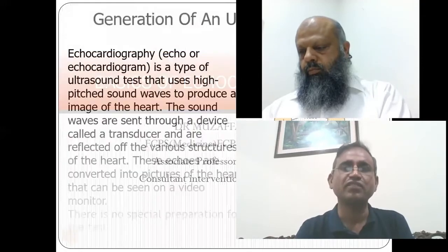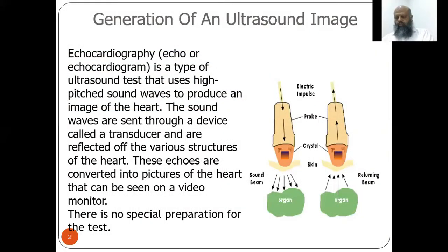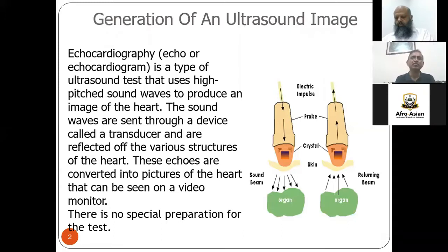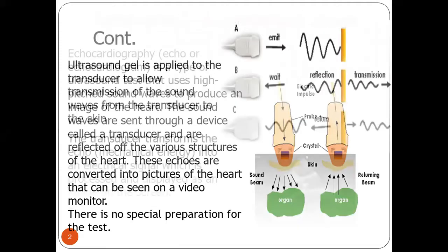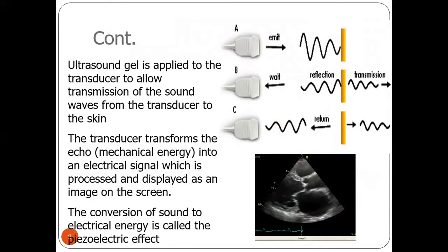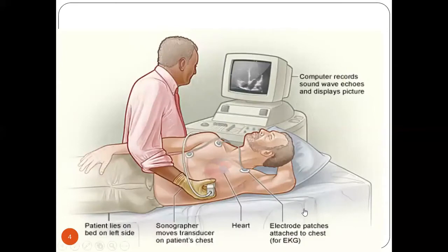The basic echocardiography general principles of ultrasound also apply to echocardiography, because echocardiography is basically ultrasound of the heart. It is a type of ultrasound test that uses high-pitch sound waves to produce an image of the heart. The transducer transforms the mechanical energy of the echo into an electrical signal, which is processed and displayed as an image on the screen.